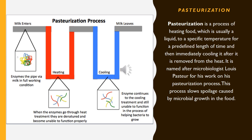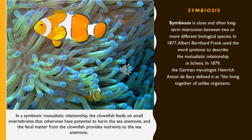Pasteurization is a process of heating food, which is usually a liquid, to a specific temperature for a predefined length of time, and then immediately cooling it after it is removed from the heat. It is named after microbiologist Louis Pasteur for his work on the pasteurization process. This process kills spoilers caused by microbial growth in the food.